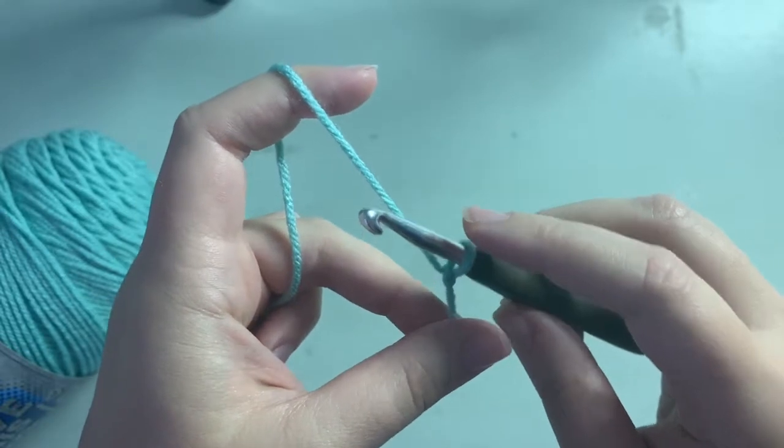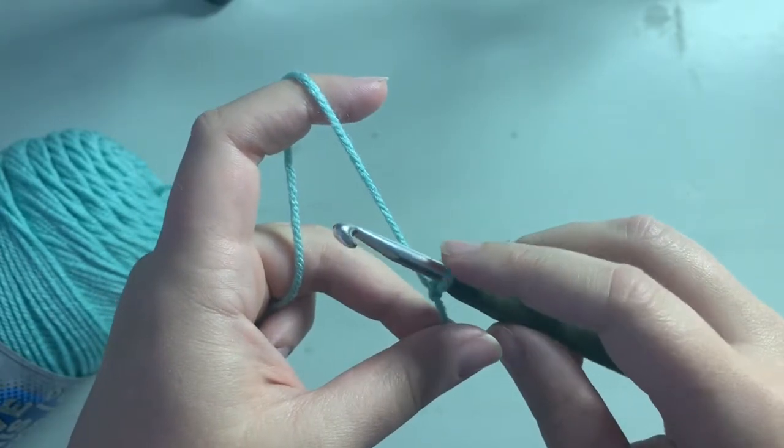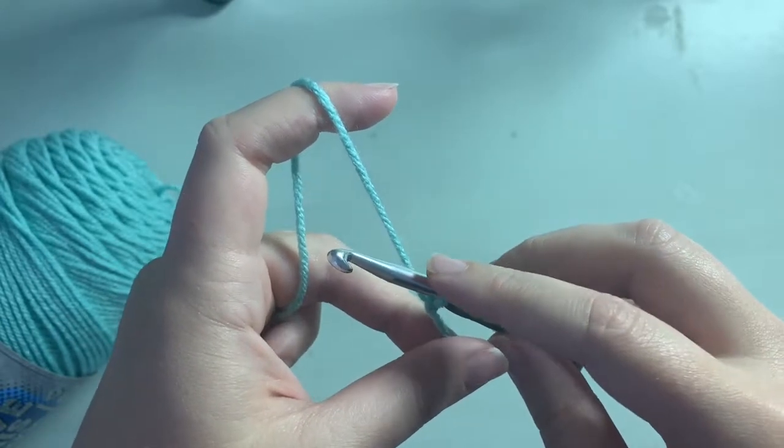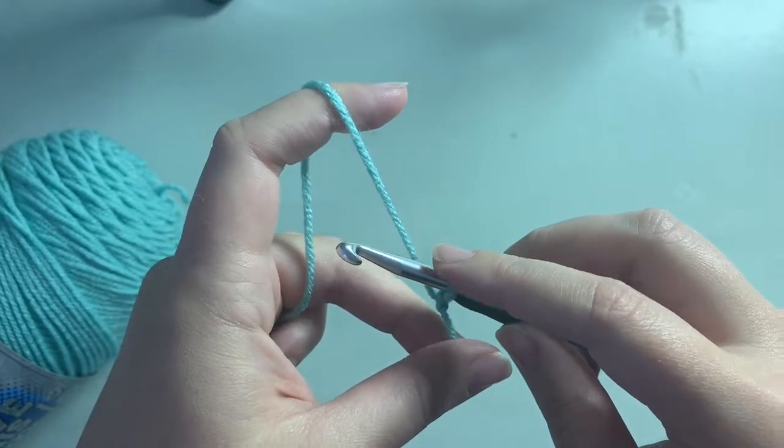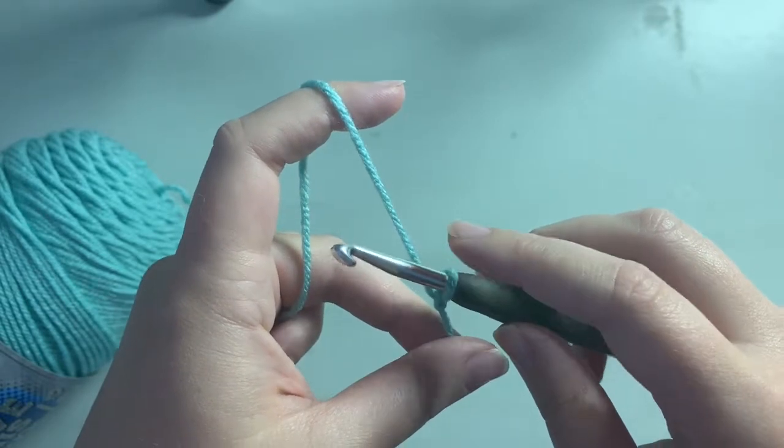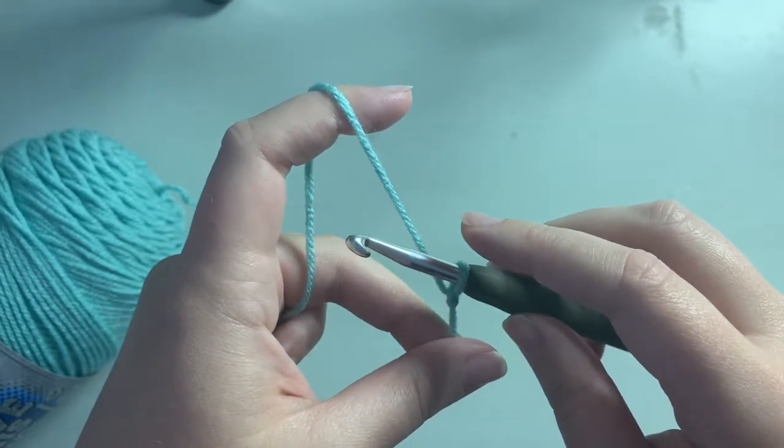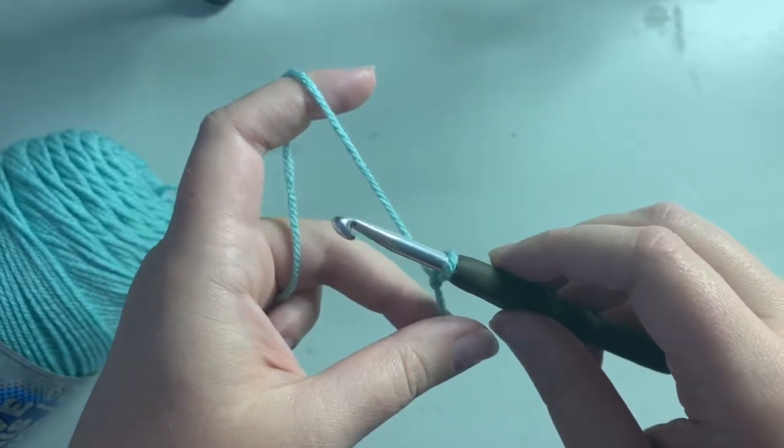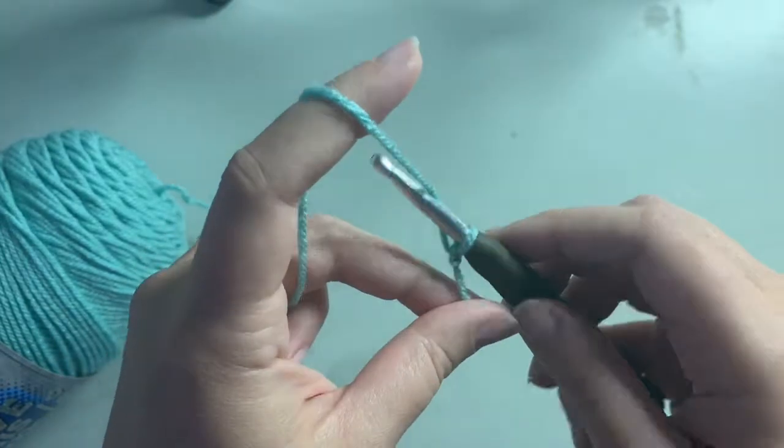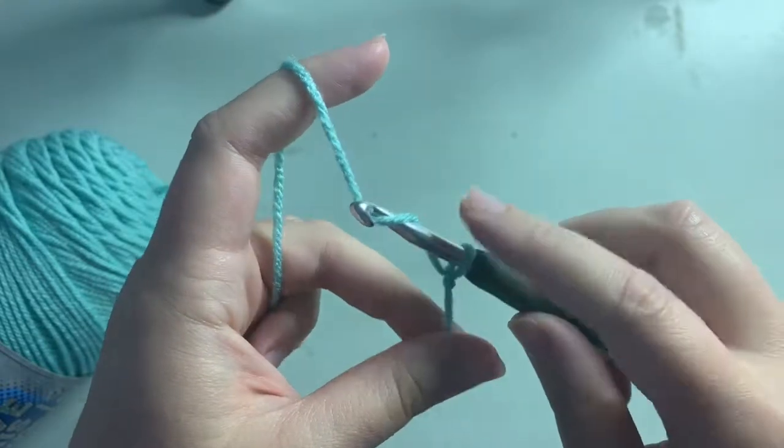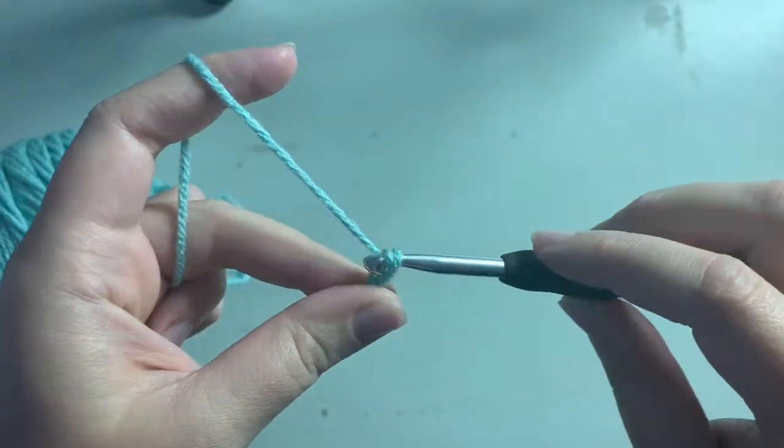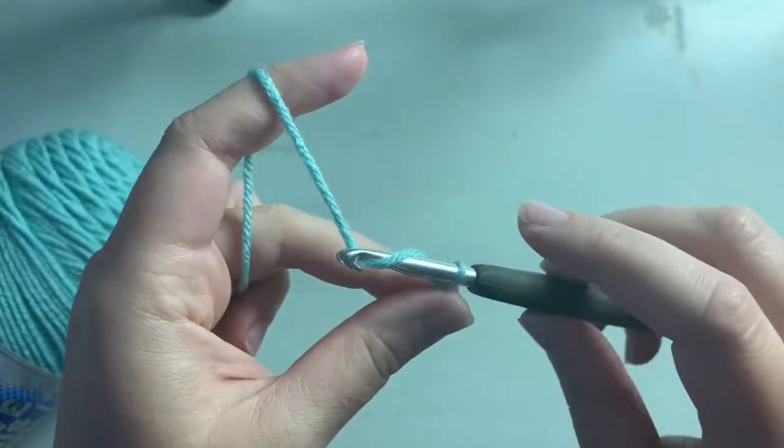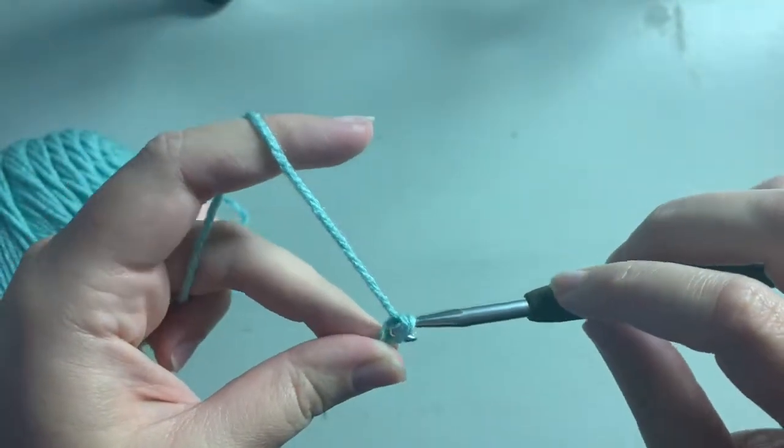The next thing we're gonna learn how to do is chain. This is how you'll start most crochet projects, at least until you learn how to do foundationless crochet stitches. But usually this is how you will start things out. What you do is you yarn over the hook and then you just pull it through. So yarn over, pull it through.